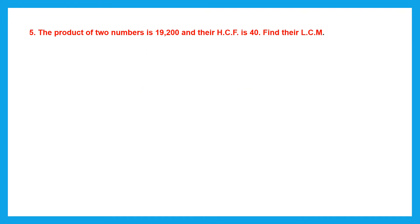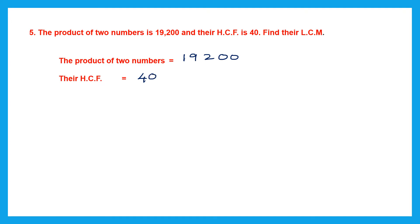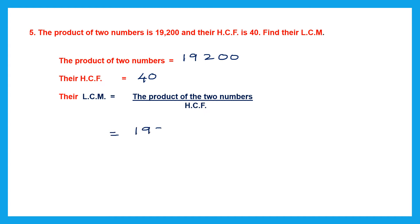Question 5: The product of two numbers is given to us, and their HCF also. This time we have to find the LCM. The product of two numbers is 19,200 and their HCF is 40.